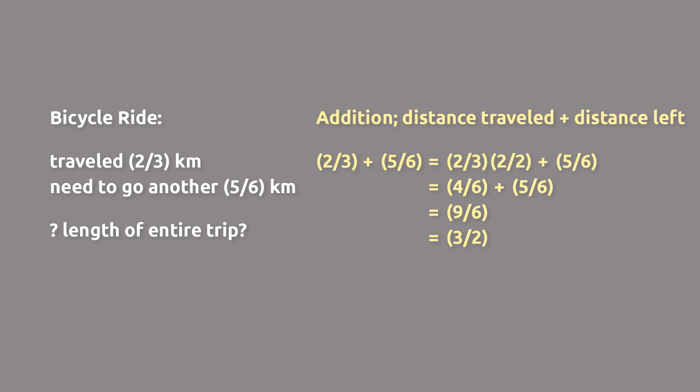And then writing this improper fraction as a mixed number, that gives us one and one-half kilometers. That is the distance that Mike travels on his entire bike ride.